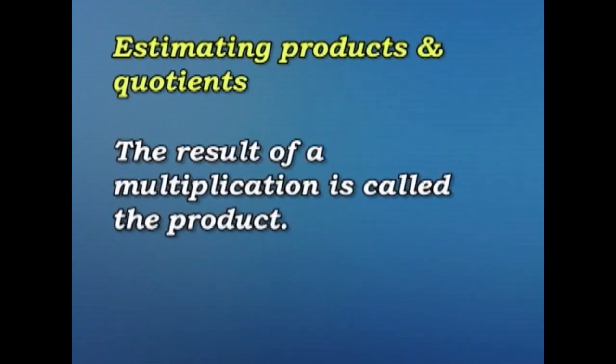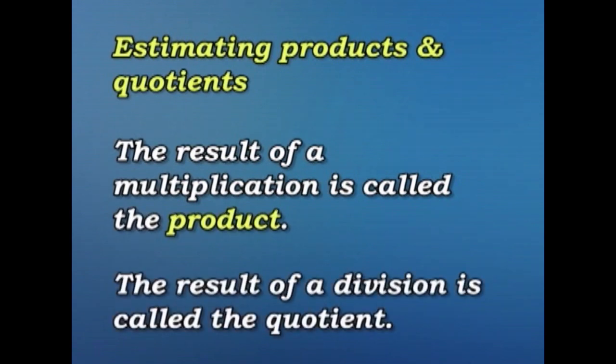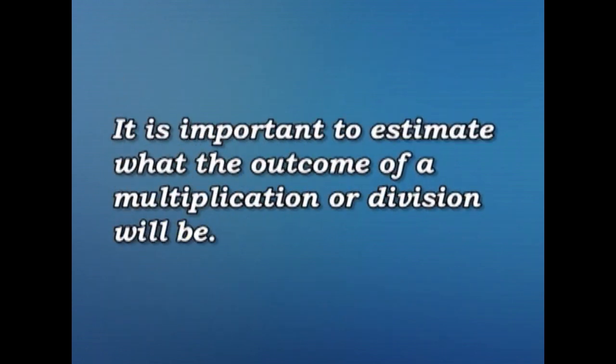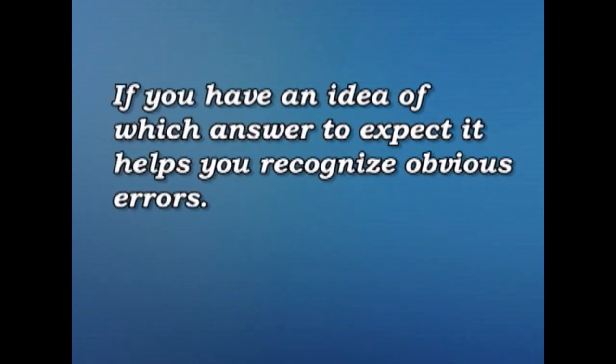The result of a multiplication is called the product. The result of a division is called the quotient. It's important to estimate what the outcome of a multiplication or division will be. If you have an idea of which answer to expect, it helps you recognize obvious errors.